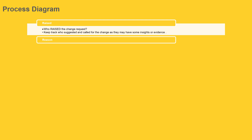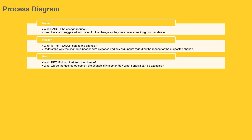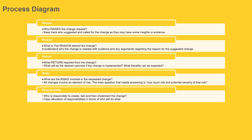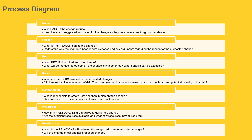The 7 R's are: Who raised the change request? What is the reason behind the change? What return is required from the change? What are the risks involved in the requested change? Who is responsible for creating, testing, and implementing the change phases? How many resources are required to deliver the change? And finally, what is the relationship between the suggested change and other changes?